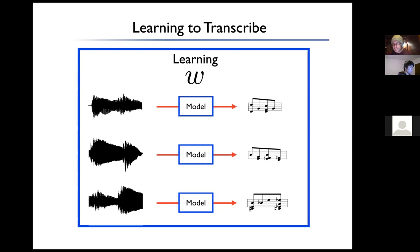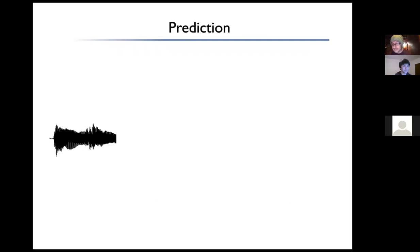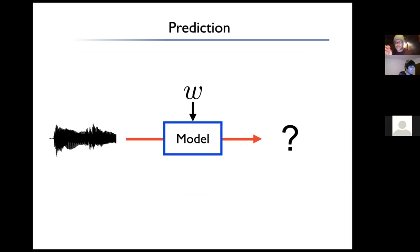Once we're done training, we hope the system has found the right patterns in the training data so that it can accurately generalize to new audio files it has never seen before, producing high-quality symbolic transcriptions. That last step — generalization — is where the problem with supervised learning arises for this task.